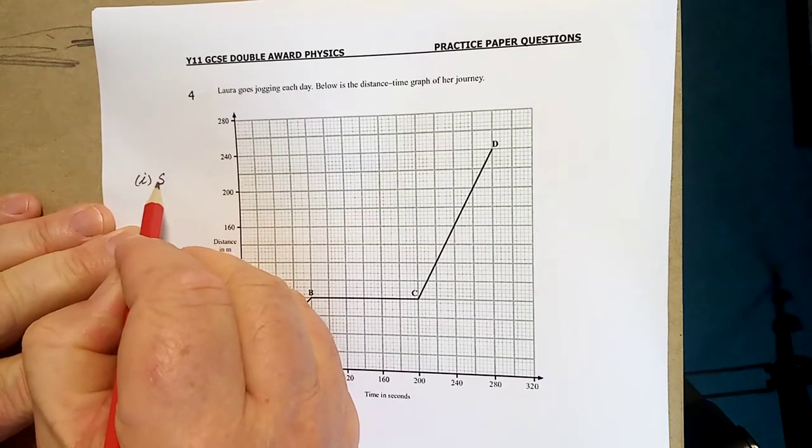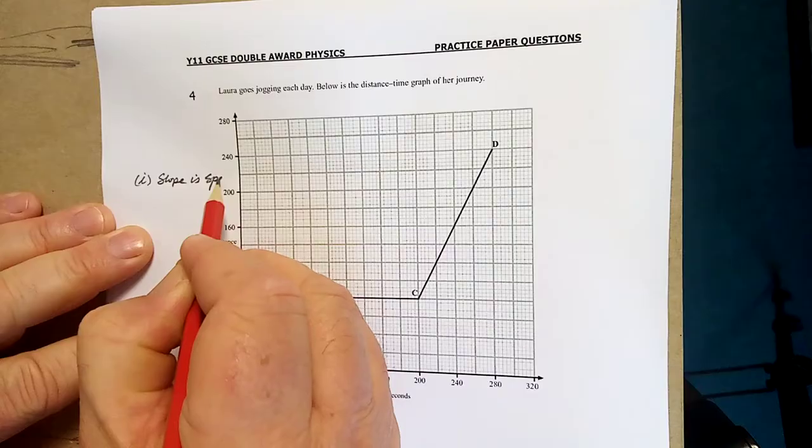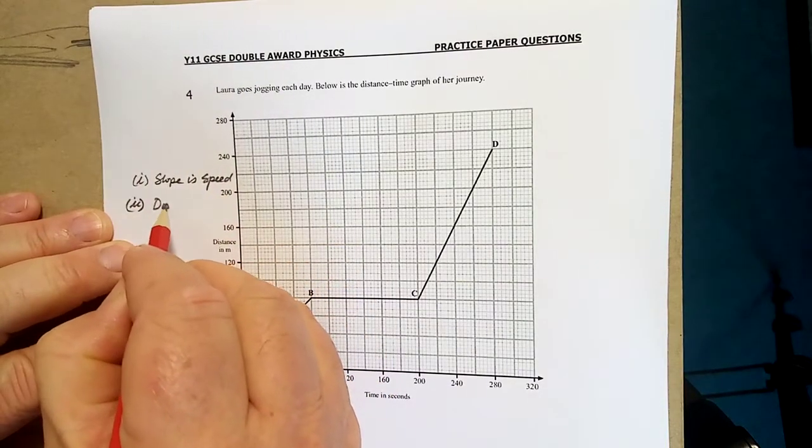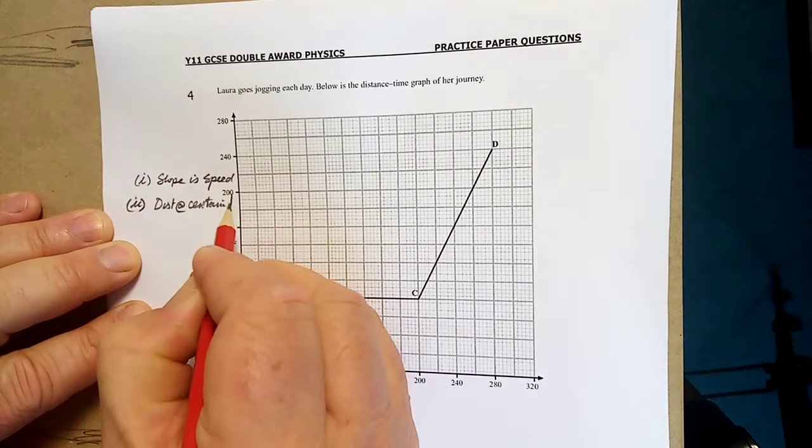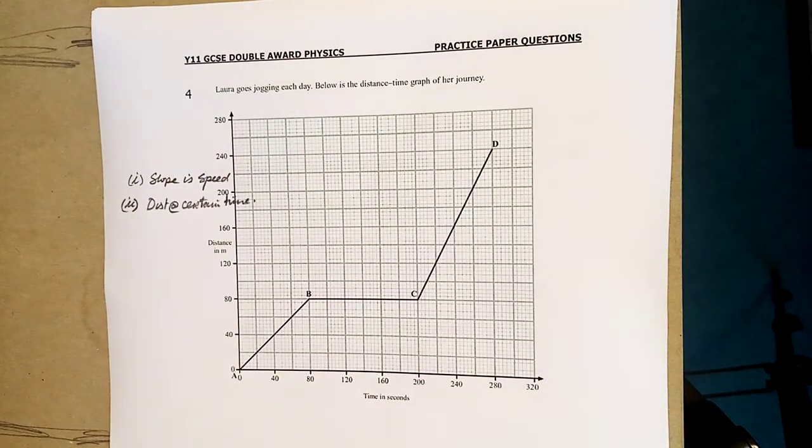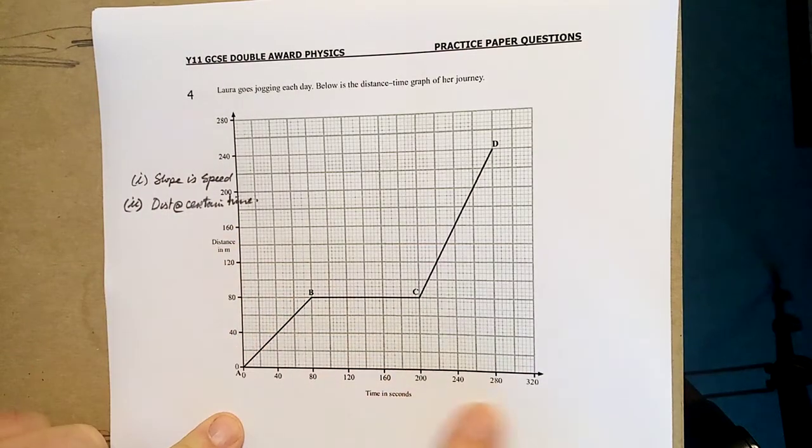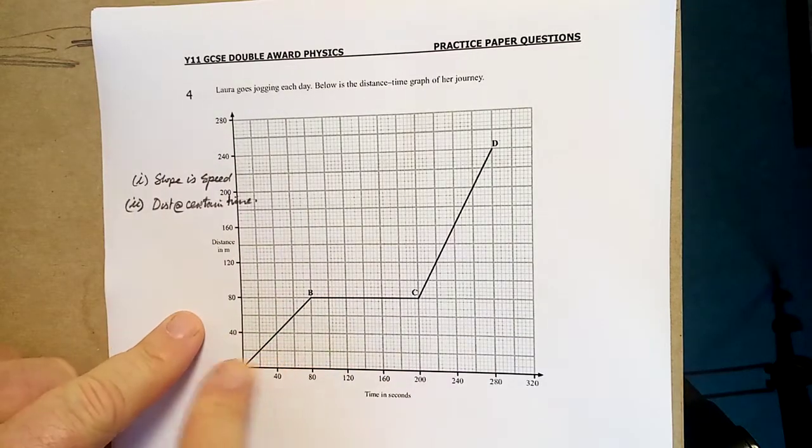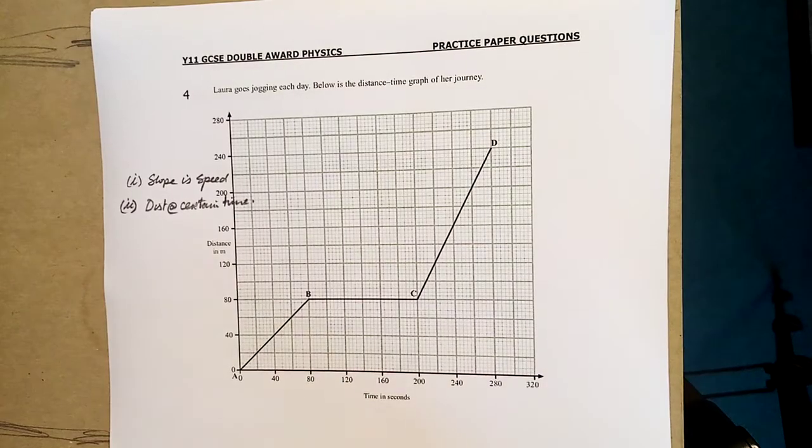So there are two things with distance-time graphs. Slope is speed. Two - distance at a certain time. It's meters, time is in seconds. I've checked all the things. So the unit will be the Y unit over the X unit. So that's going to be meters per second. So let's see if we do the question. I might have to read off a ruler.